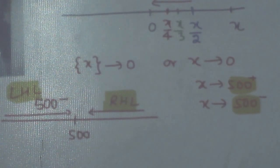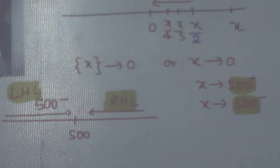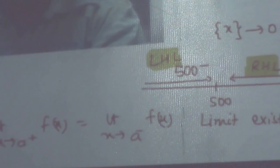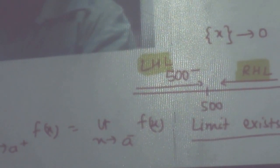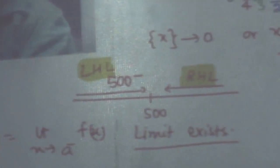If a function's left-hand limit and right-hand limit are equal, then the limit of the function exists. That is: limit x tends to a⁺ f(x) equals limit x tends to a⁻ f(x). If both are equal, the limit exists; otherwise it does not exist. This means x approaches 500, the limiting value is 500, and if the function's limiting value comes out to be a finite value, then we say the limit of the function exists.